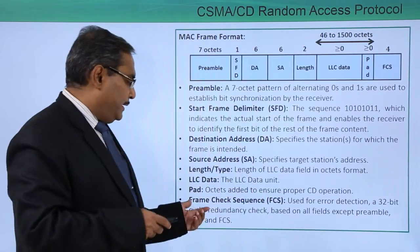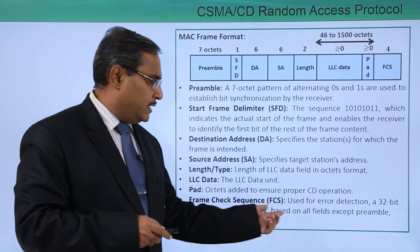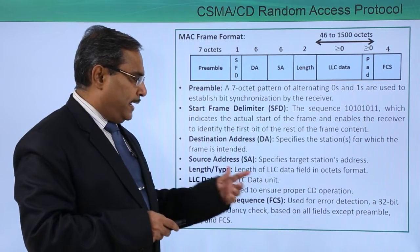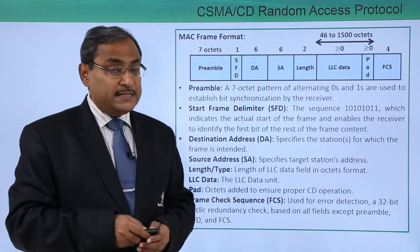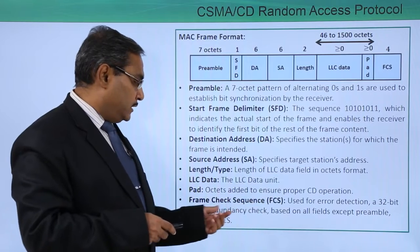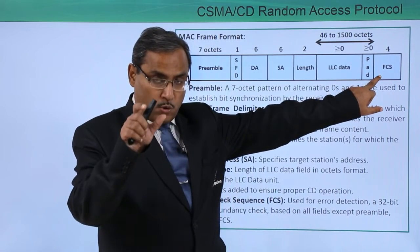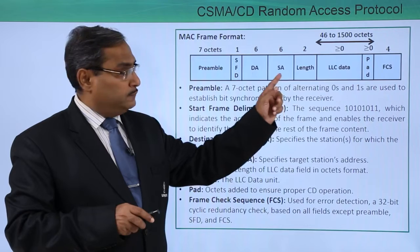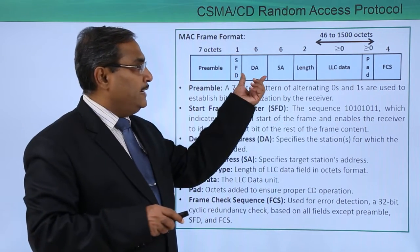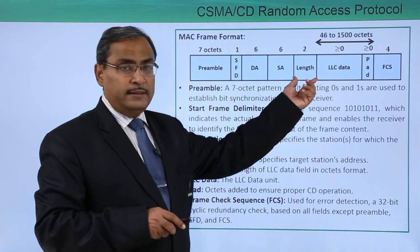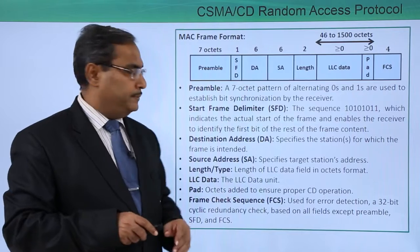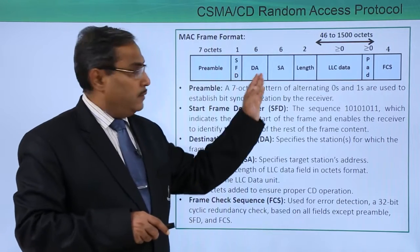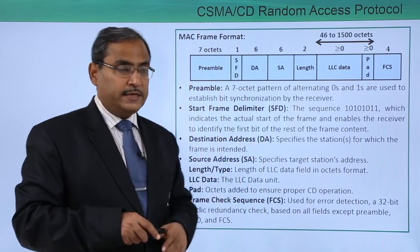Finally, there is the Frame Check Sequence (FCS), used for error detection. It is a 32-bit Cyclic Redundancy Check (CRC) based on all fields except the preamble, SFD, and FCS itself. The CRC is 32 bits, meaning 4 bytes. These 4 bytes are calculated over the Destination Address, Source Address, Length, and LLC Data fields — not over the preamble, SFD, or pad.